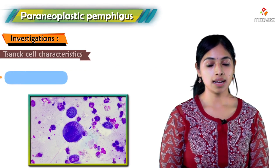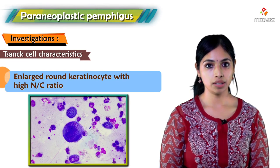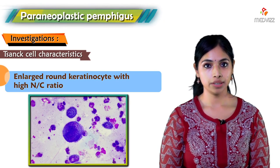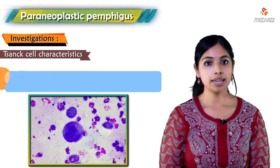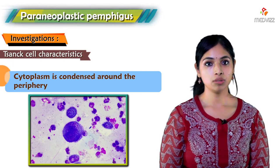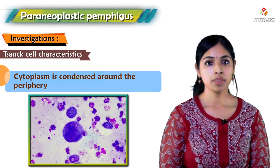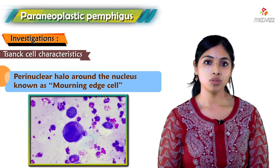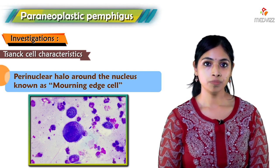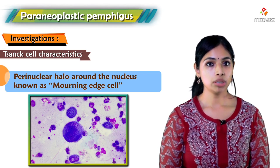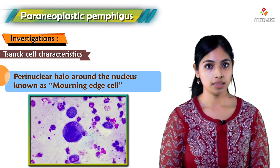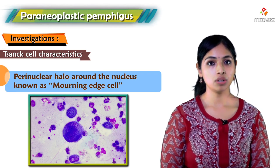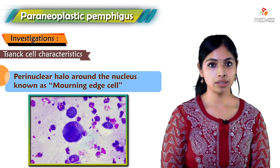A Tzanck cell is a large round keratinocyte with a high nuclear-to-cytoplasmic ratio. The cytoplasm is condensed around the periphery, and around the nucleus there is a perinuclear halo — this is known as a tombstone cell. This is a simple bedside investigation to confirm the diagnosis.